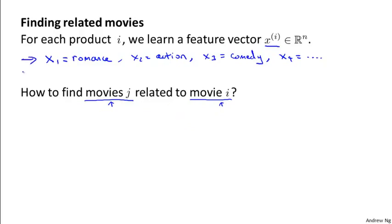So now that we've learned these feature vectors, this gives us a very convenient way to measure how similar two movies are. In particular, movie i has a feature vector xi, and so if you can find a different movie J so that the distance between xi and xj is small, then this is a pretty strong indication that movies J and i are somehow similar, at least in the sense that someone that likes movie i may be more likely to like movie J as well.